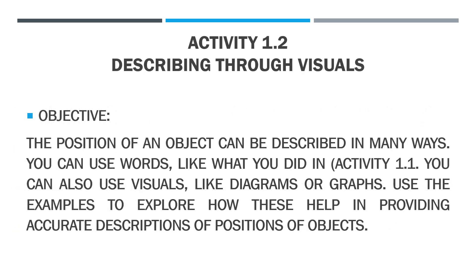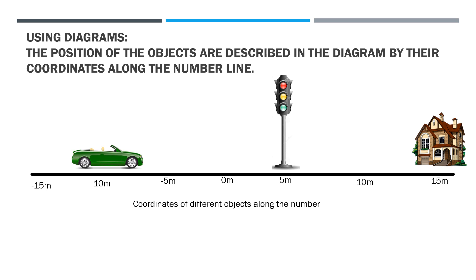Activity 1.2: Describing through visuals. The position of an object can be described in many ways. You can use words like what you did in Activity 1.1. You can also use visuals like diagrams or graphs. Using diagrams, the position of objects are described by their coordinates along the number line. This one represents negative 15 meters, negative 10 meters. This one describes the meter. This one is the spotlight or traffic light. This one is the car. And this one is the house. These are the coordinates of different objects along the number line. Take note — this is your reference for how to answer the questions that follow.